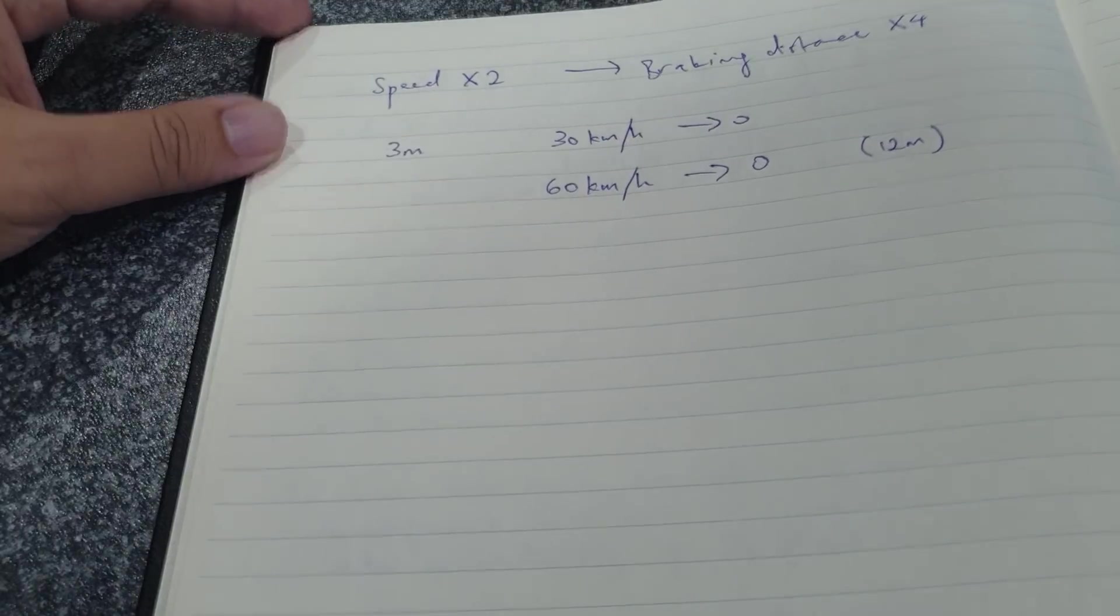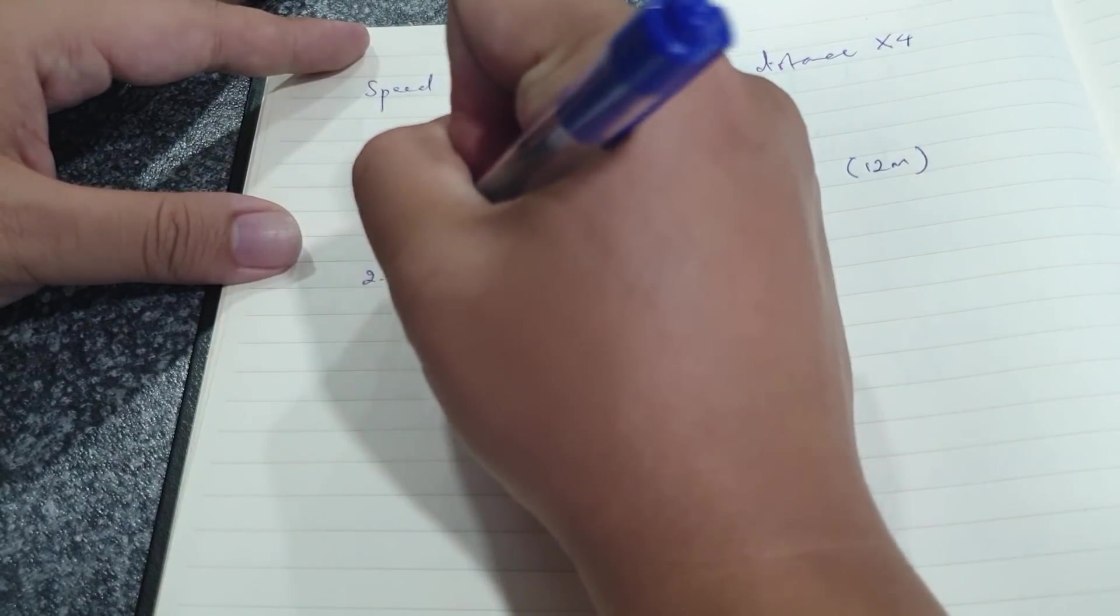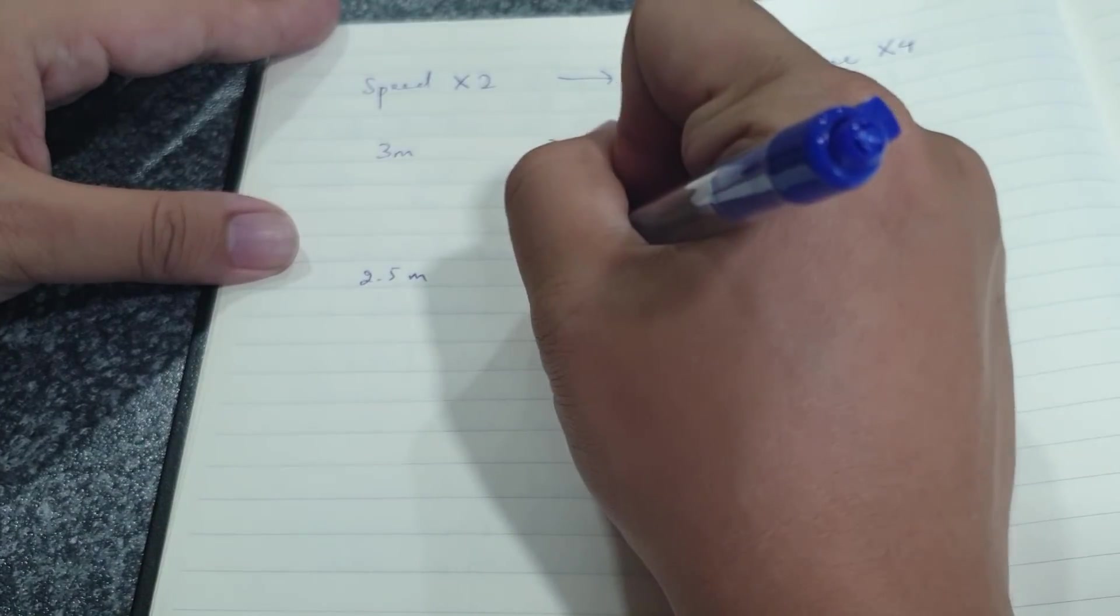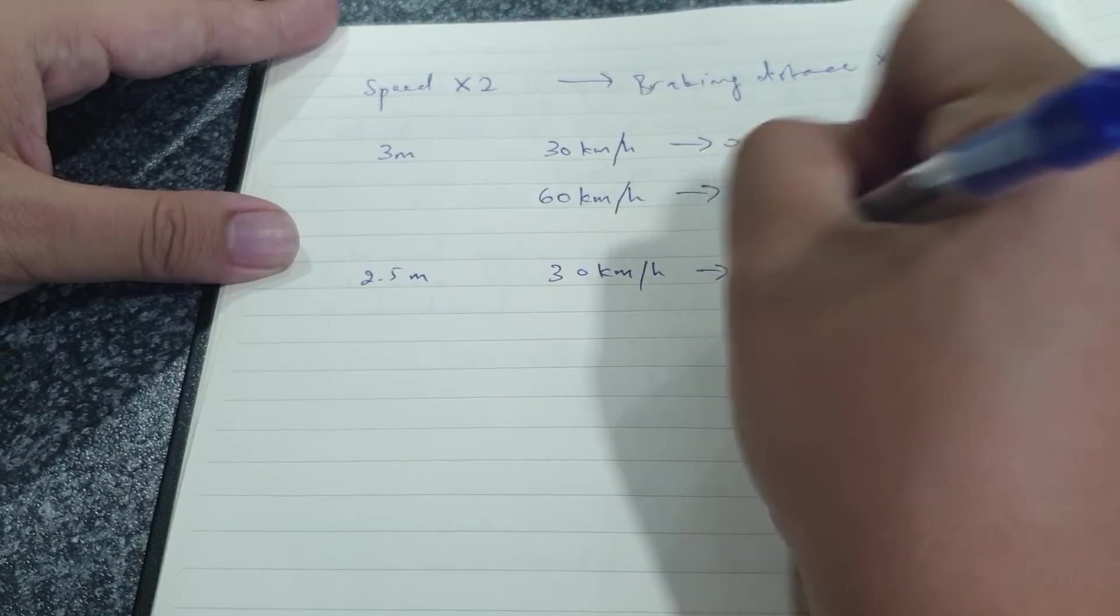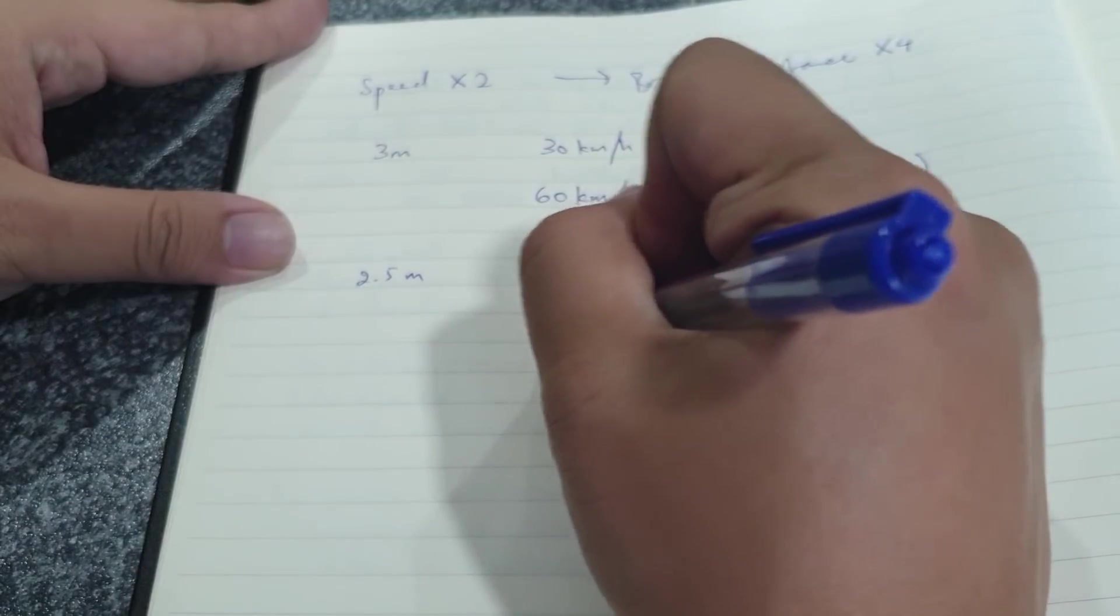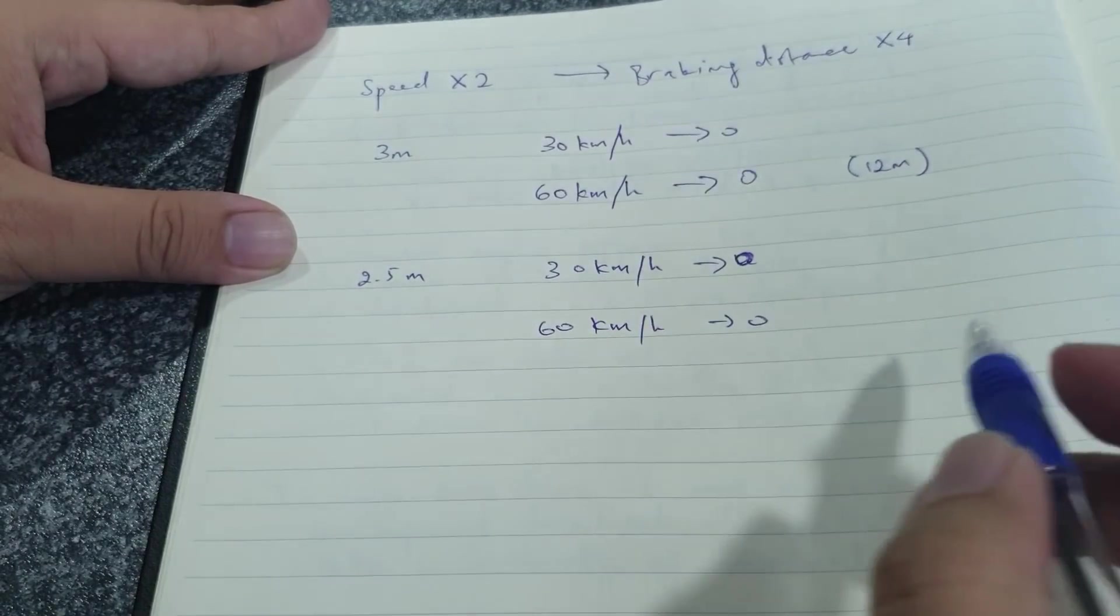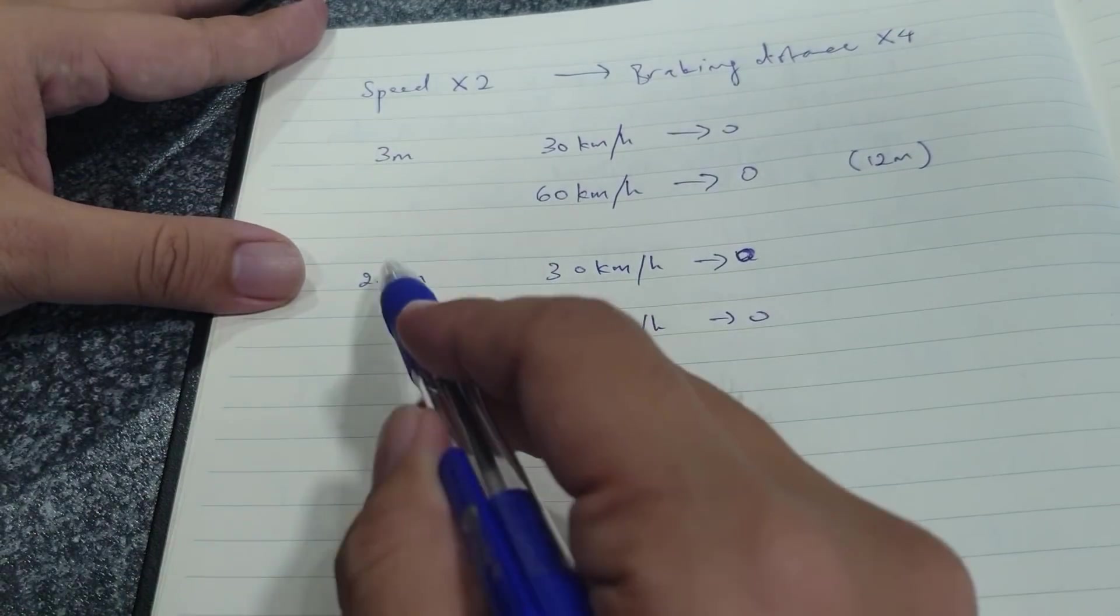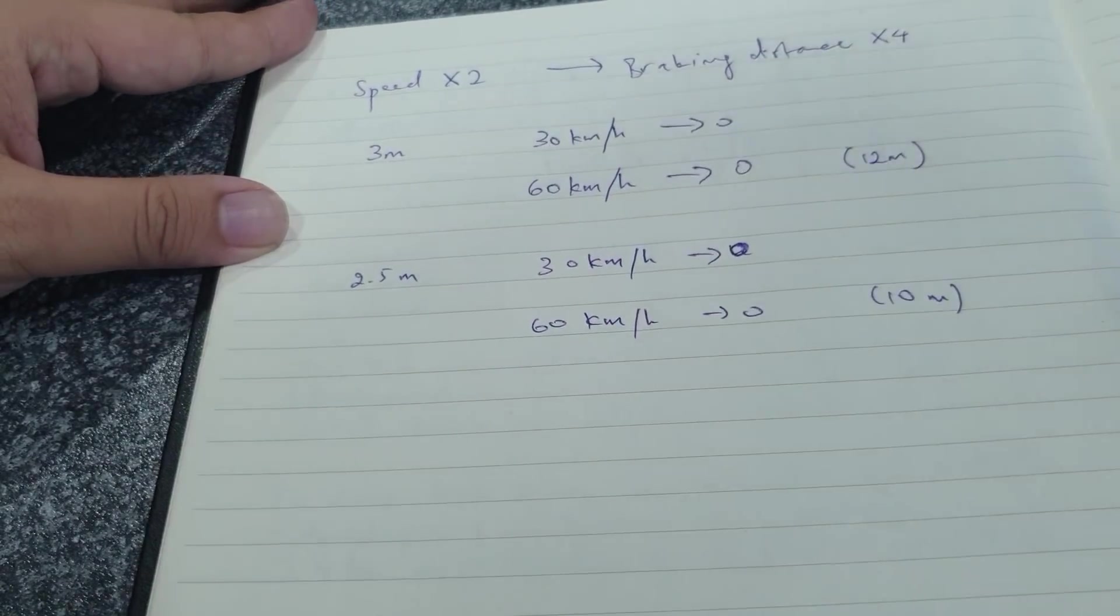Let's say you upgraded your braking system. Now you only need 2.5 meters to stop from 30 kilometers per hour. To stop from 60 kilometers per hour, you will still require 4 times this distance, which would be 10 meters.